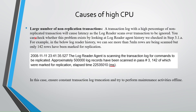The second cause is a large number of non-replication transactions. A transaction log with a high percentage of non-replicated transactions will cause latency as the log reader scans over transactions to be ignored. You can check whether this problem exists by looking at log reader agent history, which we checked in step 3. For example, in the below log reader history, we can see more than 5 million rows are being scanned but only 142 rows have been marked for replication. In this case, ensure that transaction log truncation is not blocked and try to perform maintenance activities during offline periods.